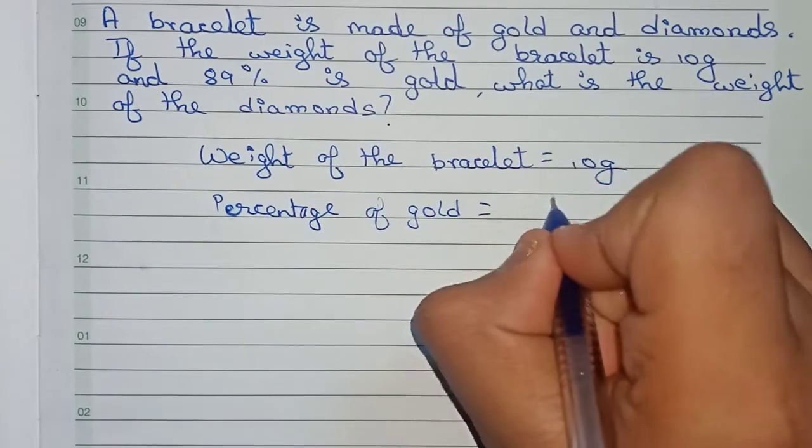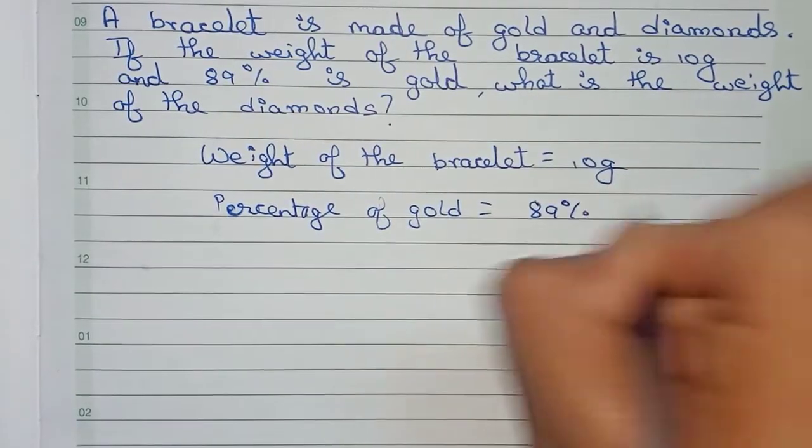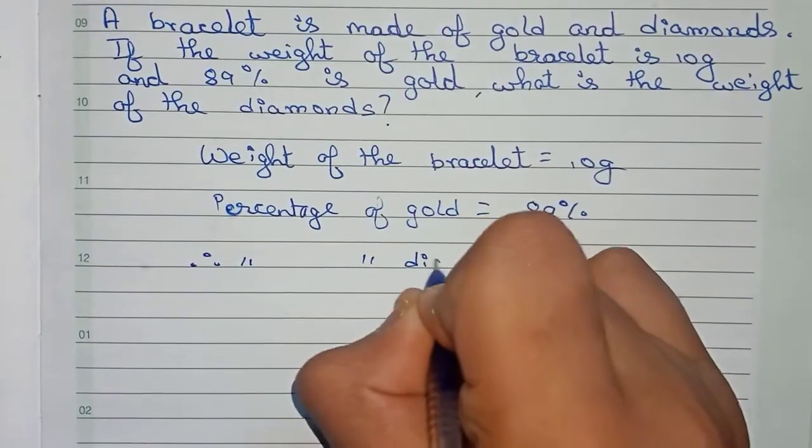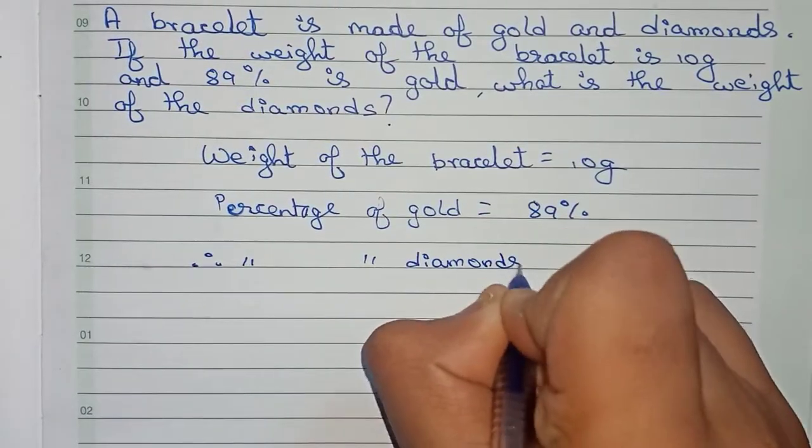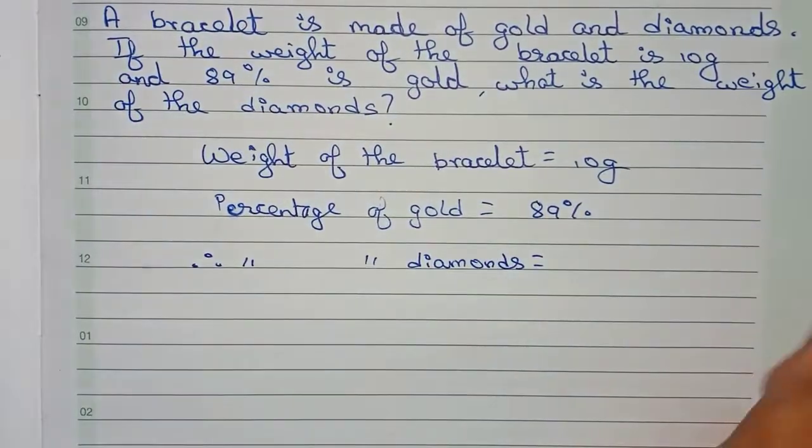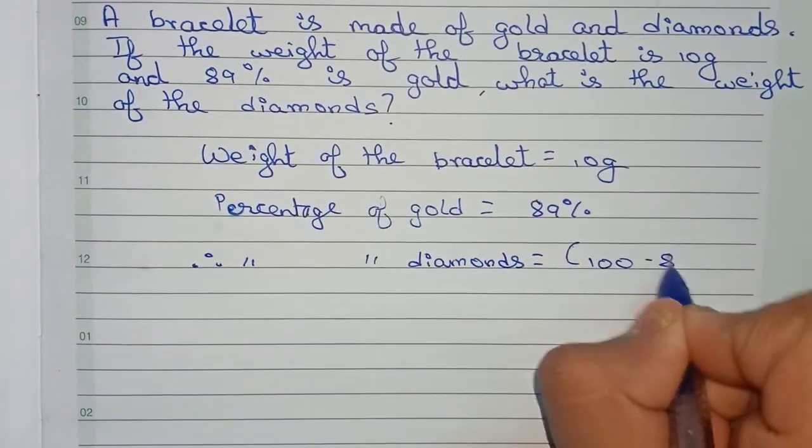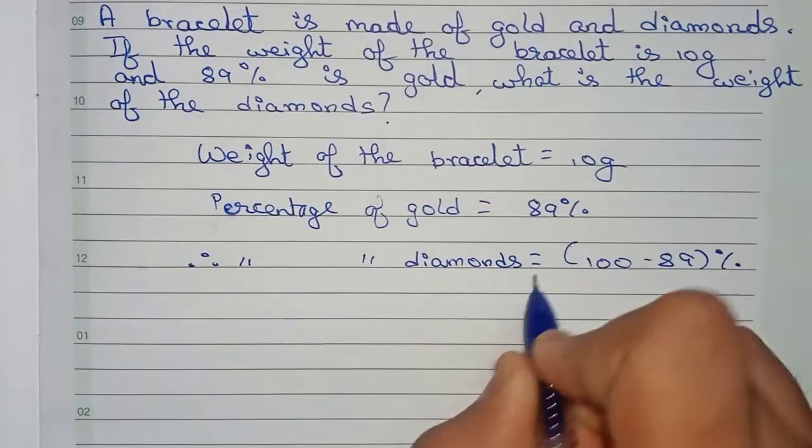Therefore, now the percentage of diamonds: As the percentage of gold is 89%, therefore diamonds will be 100 minus 89%, which is equal to 11%.